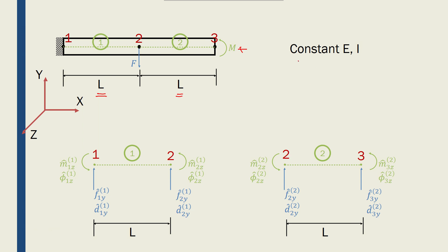We consider constant E and constant I. We can discretize this beam into two elements: element 1 between nodes 1 and 2, and element 2 between nodes 2 and 3. For each node we have its moment and rotation, and its force and displacement.